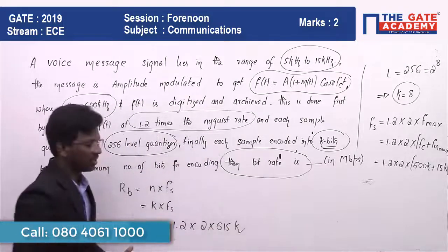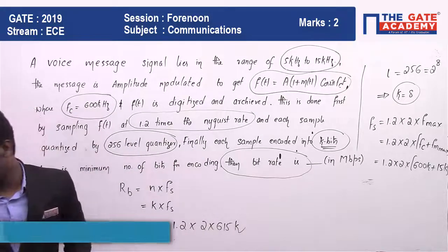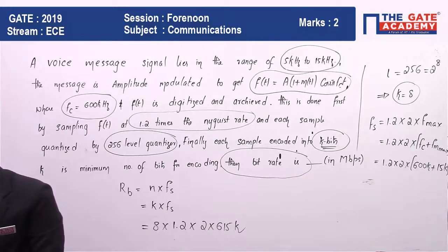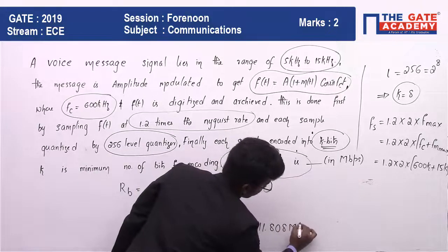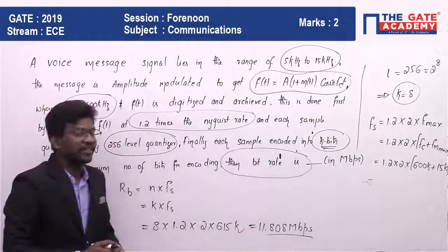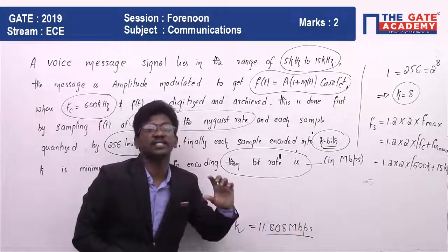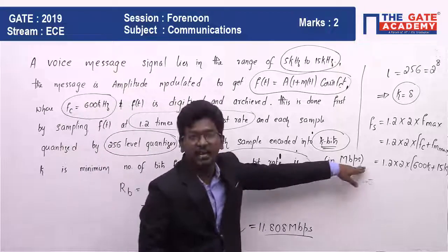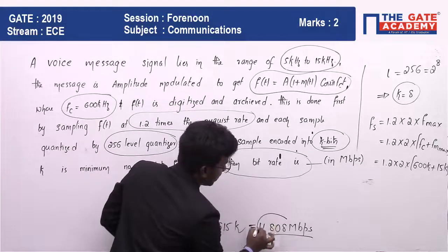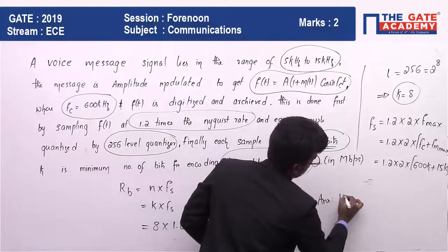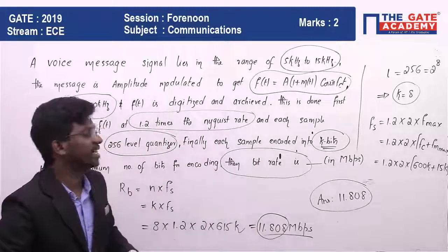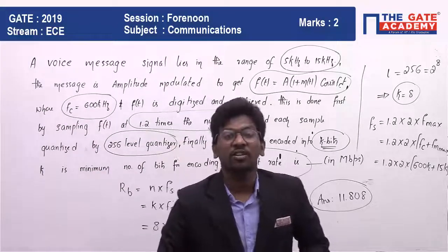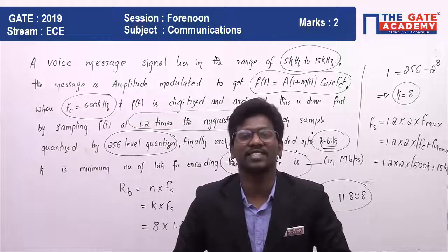Substituting into the bit rate formula rb = k × fs = 8 × 1.2 × 2 × 615 kHz, the answer comes out to 11.808 Mbps. So 11.808 Mbps is the answer. Hope you liked the video — don't forget to like and share with your friends. Thank you.